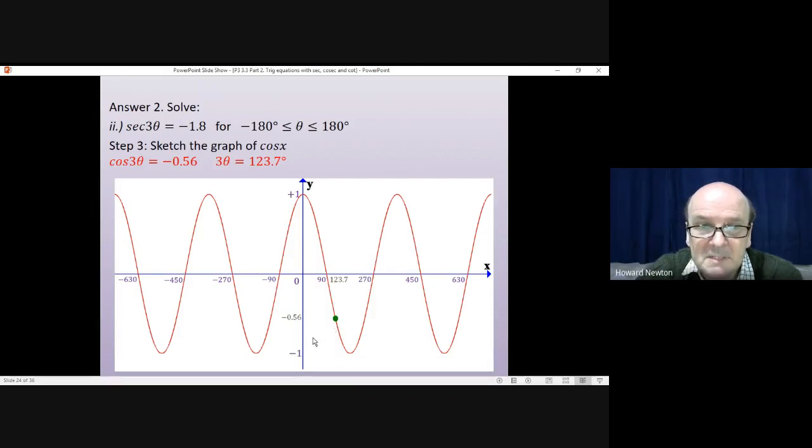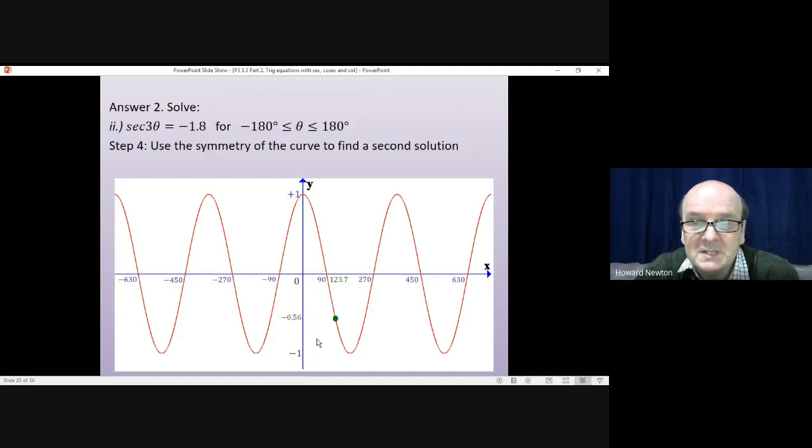The next step, step four, is using the symmetry of the curve to find a second solution. And we said sine and cos. They're symmetric around the maximums. They're symmetric around the minimums. So this minimum point here will be a line of symmetry.